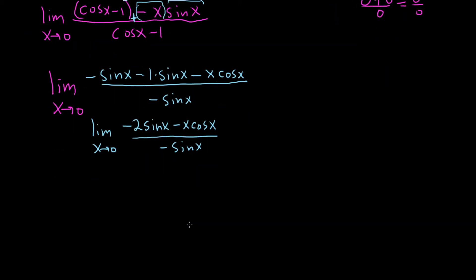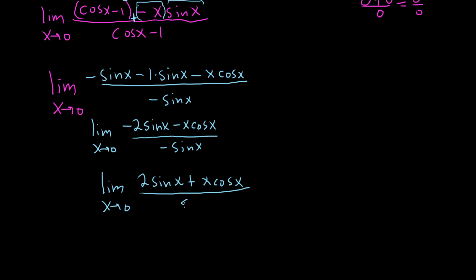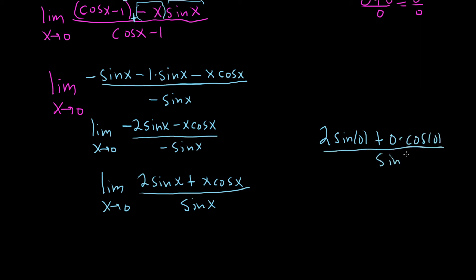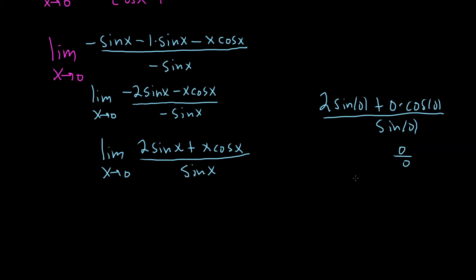These negatives can all cancel — we pull out a negative 1 from the top and it cancels with the bottom. So we get the limit as x approaches 0 of 2 sine x plus x cosine x, over sine x. Plugging in 0 gives us 2 times sine 0 plus 0 times cosine 0, over sine 0 — that's 0 over 0. Another indeterminate form!